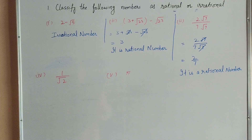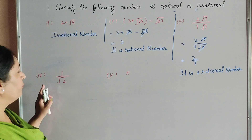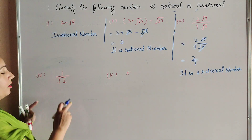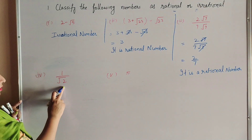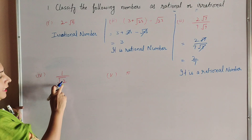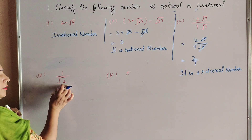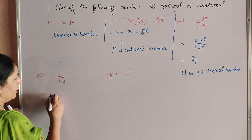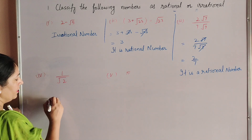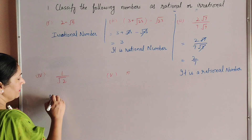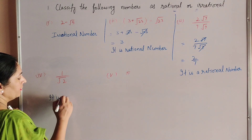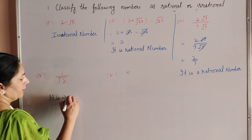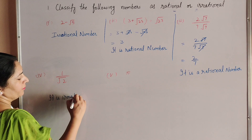Now we move to the fourth part: 1 over square root 2. The speaker states that since square root 2 is considered here, 1 over square root 2 is also a rational number.